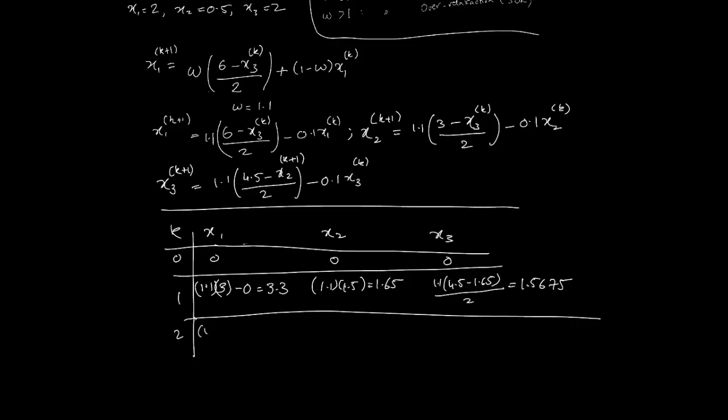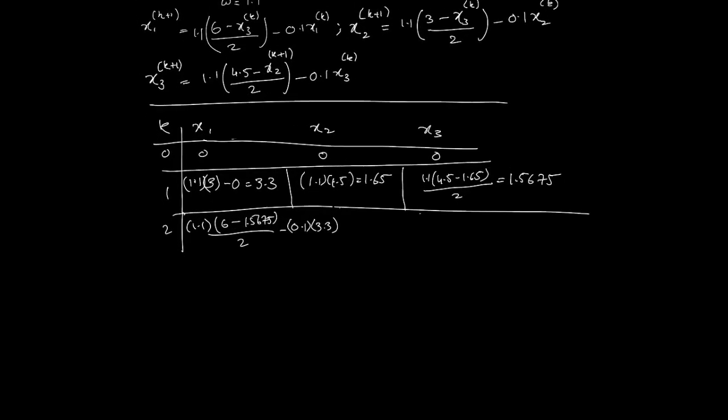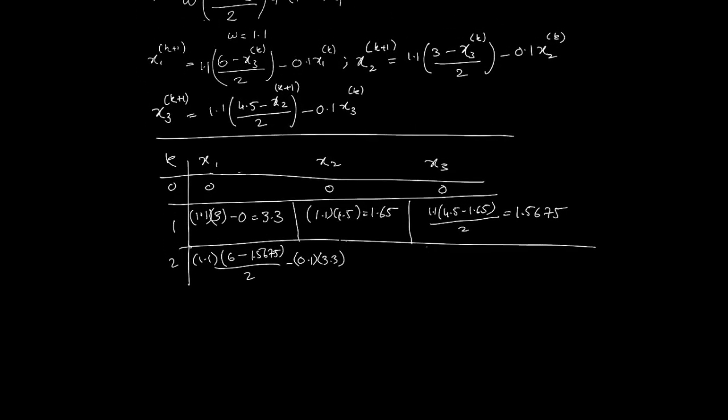Let's do one more iteration. As we come in, it's going to be 1.1 multiplied by (6 - x3_1, which is 1.5675)/2, minus 0.1 times x2... sorry x1, the previous one, so that's 3.3, and that will work out to be 2.1078757875. Then let's go to the second iterate for x2. That's going to be 1.1 into (3 - 1.5675)/2, minus 0.1 into 1.65, that's going to be 0.62228875.